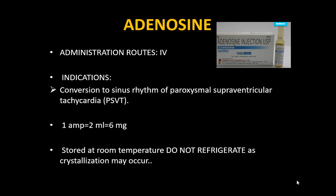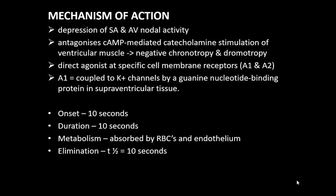Adenosine is used for conversion of PSVT to sinus rhythm per ACLS guidelines. One ampoule: 2 mL = 6 mg. It should be stored at room temperature — refrigeration causes crystallization. Before use, check the fluid is clear; discard if not. Mechanism: depresses SA and AV nodes, antagonizes cAMP-mediated catecholamine stimulation of ventricular muscles, and has direct action on A1 and A2 receptors.